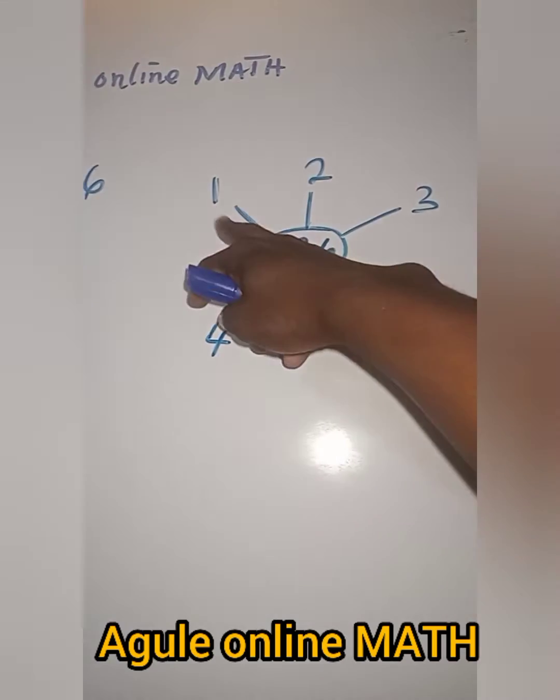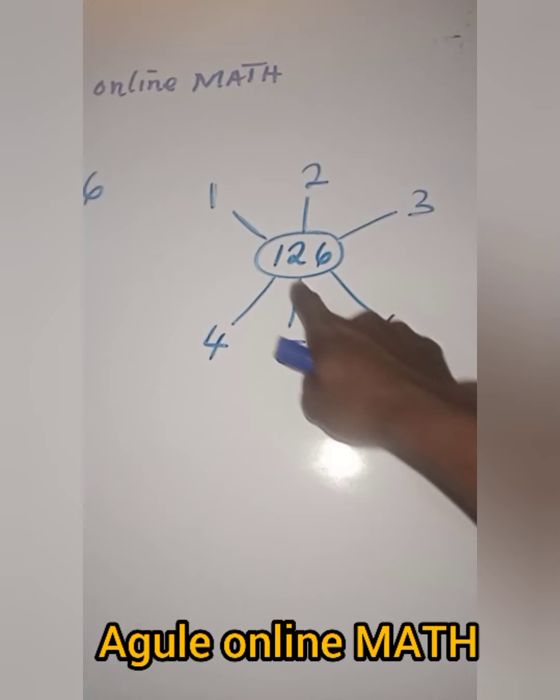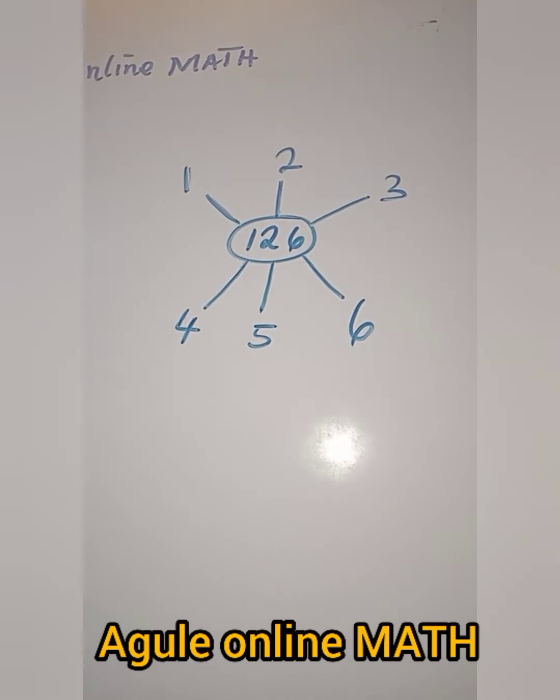Here we have 1, 2, 3, 4, 5, 6. How are we going to get 126?